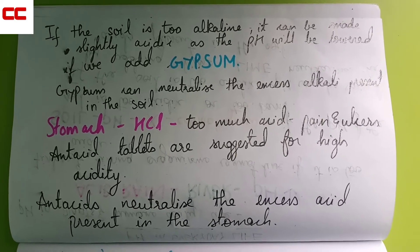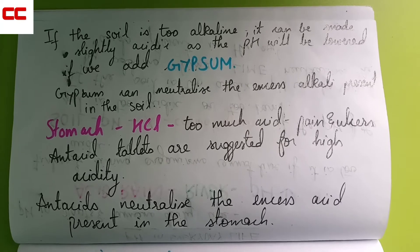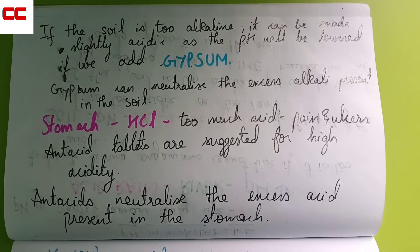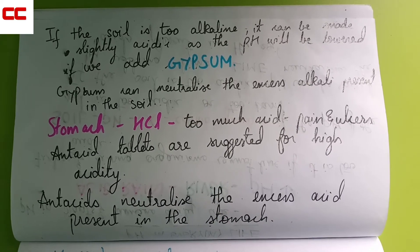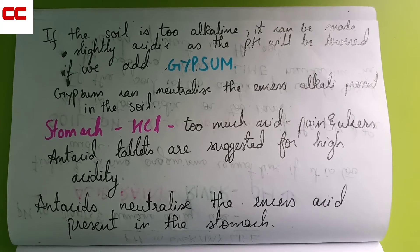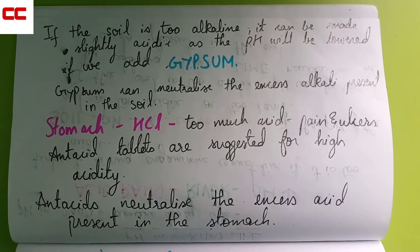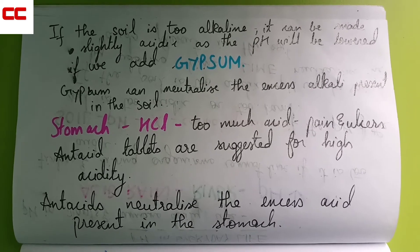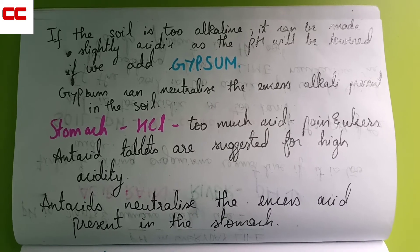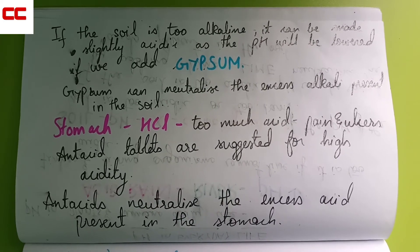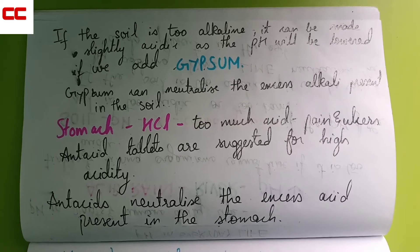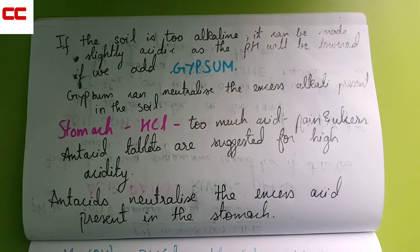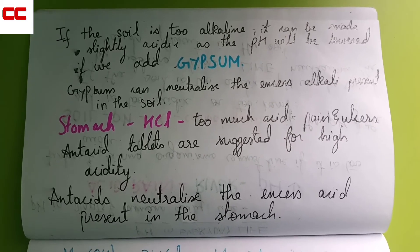In the stomach there is an acid called HCl, which is a very strong acid. If there is too much acid in the stomach, you get stomach pain and also ulcers. That's when patients are given antacid tablets. Antacid tablets are suggested for high acidity — they neutralize the excess acid present in the stomach, which means antacids are a kind of base.